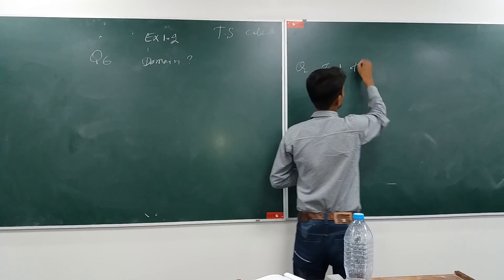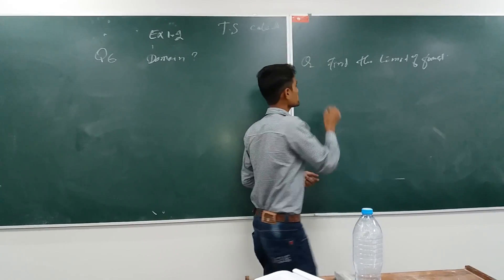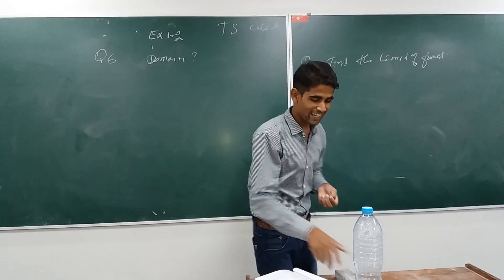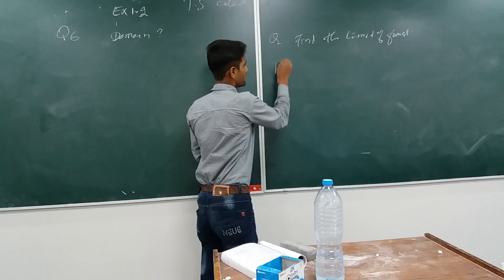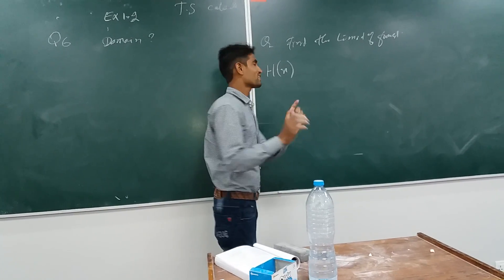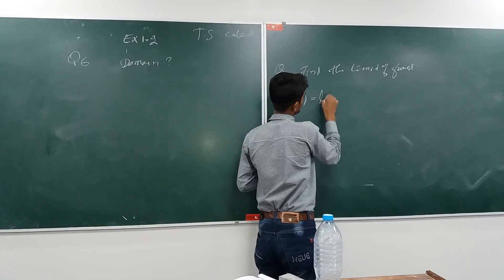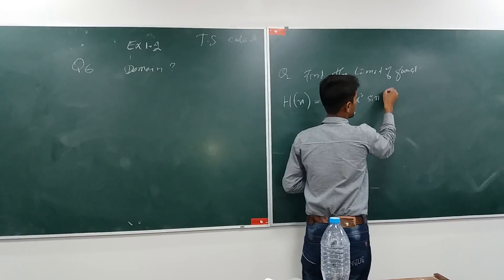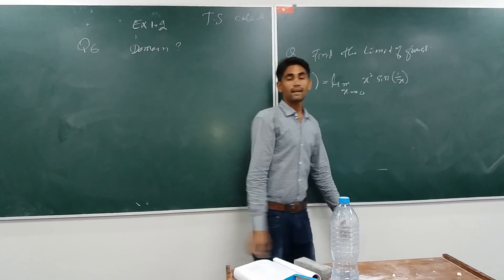Find the limit of the function. The function is H of x — I am naming it after the student Haneev. H of x: there is a limit as x approaches to zero of x squared times sine of 1 upon x. That was the problem, and we have to determine the limit of this.